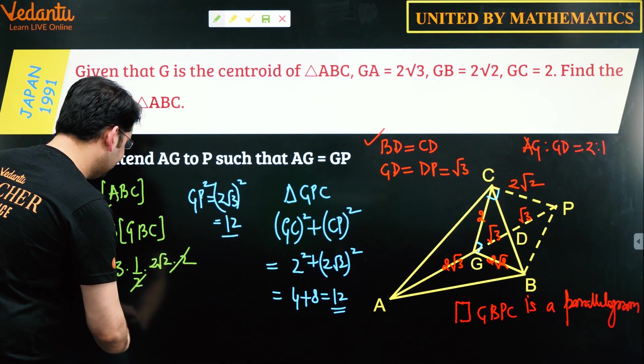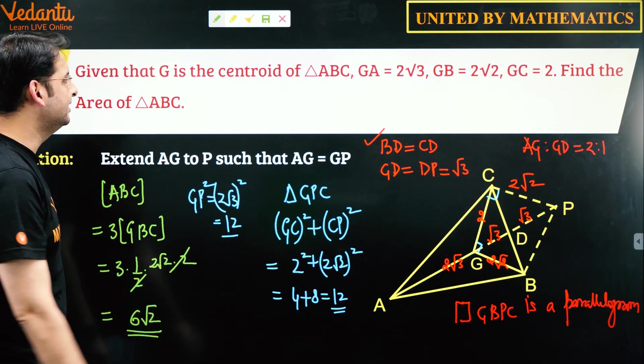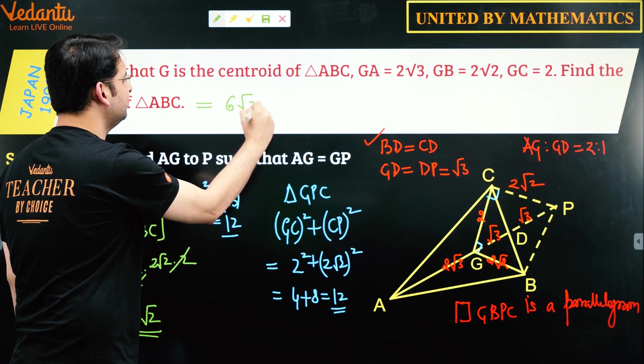So this gets cancelled out and area is coming out to be 6√2, which is the answer. So area is 6√2.